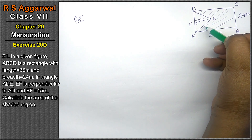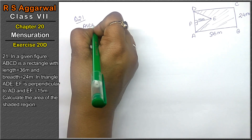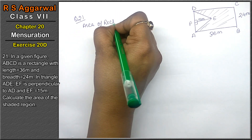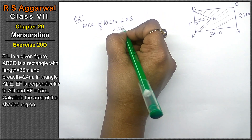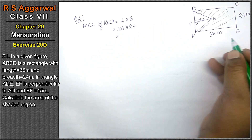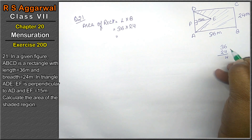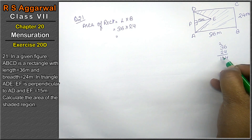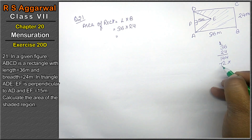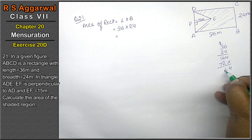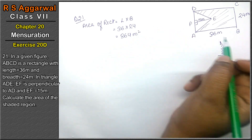We need to find the area of the shaded region. First, we will find the area of the rectangle. Area of rectangle equals length into breadth. Length is 36 and breadth is 24. So 36 into 24 equals 864 meter square.